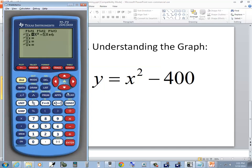If I press Y equals, press clear, I'm going to have my x squared minus 400. And then I'll press graph.